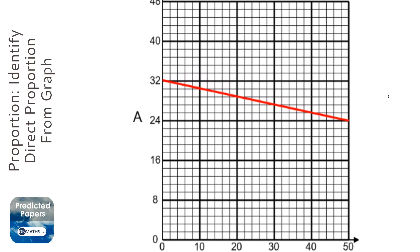Now there's a few rules for direct proportion. The main rule is it needs to go through the origin, so it needs to start at the bottom left. And the second rule is it needs to be a straight line.